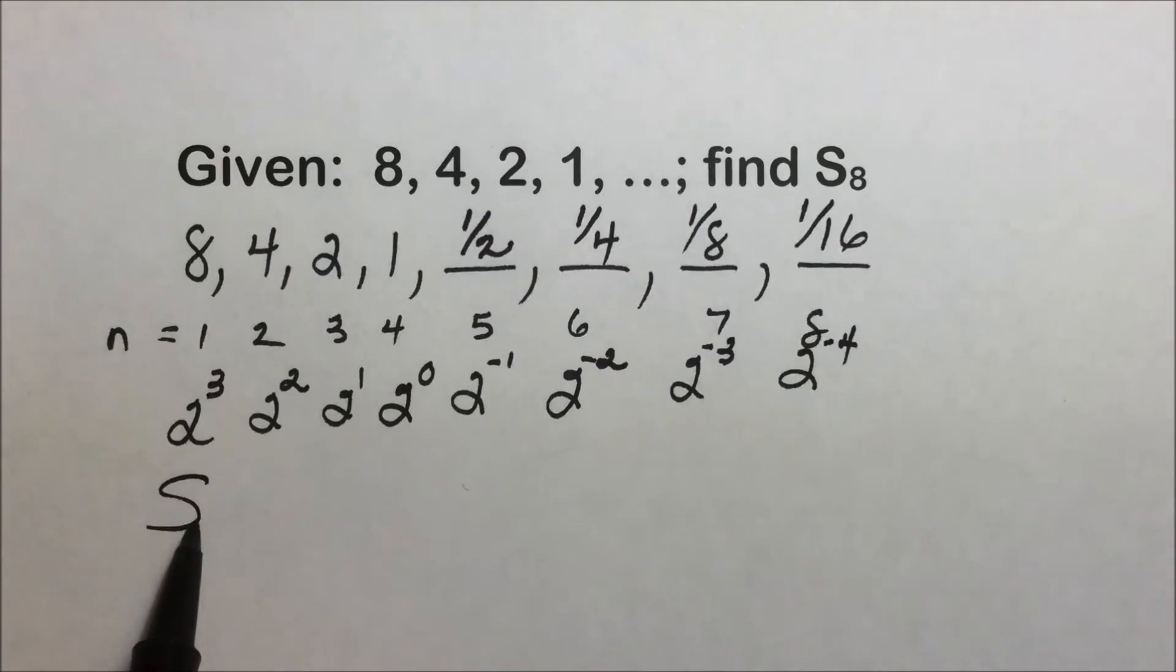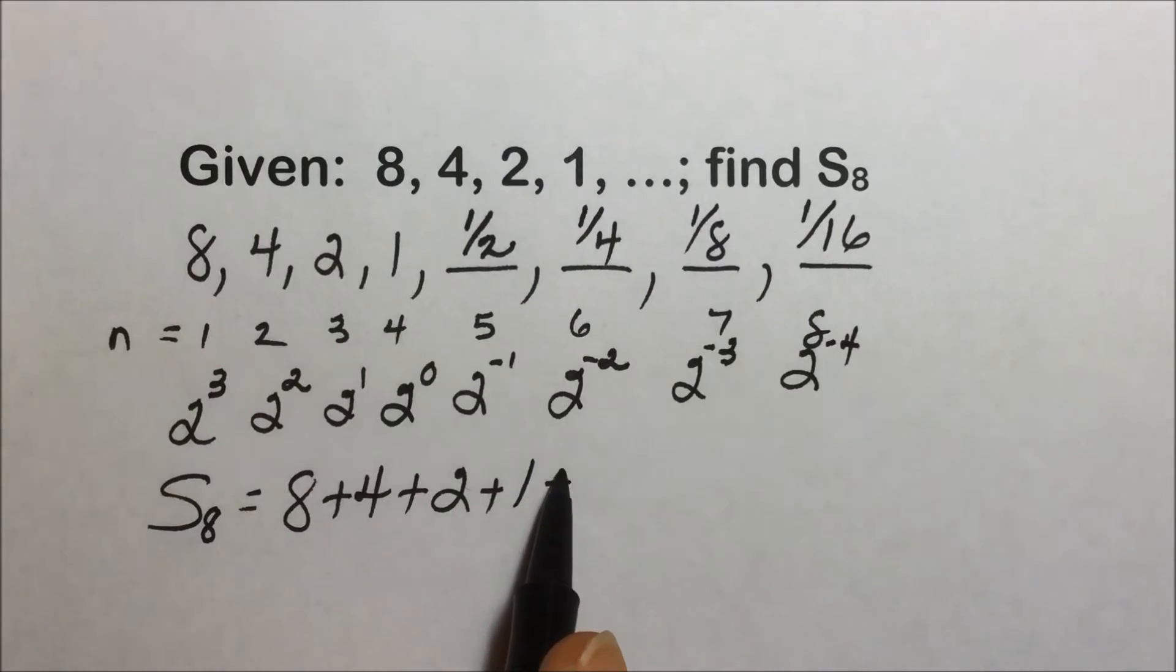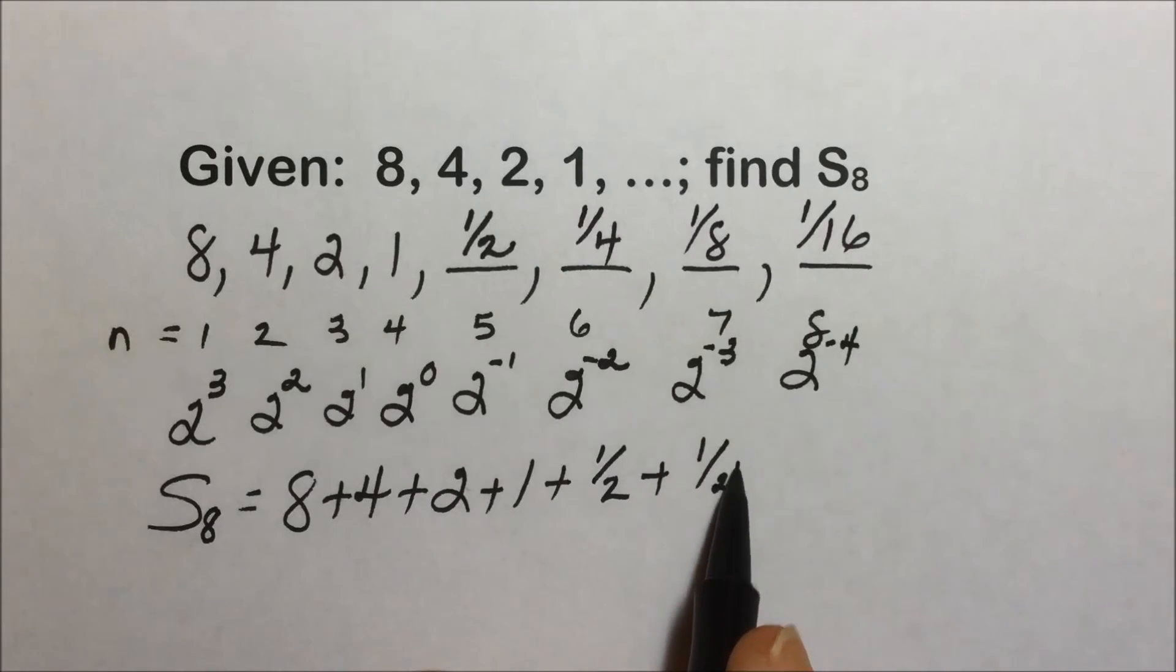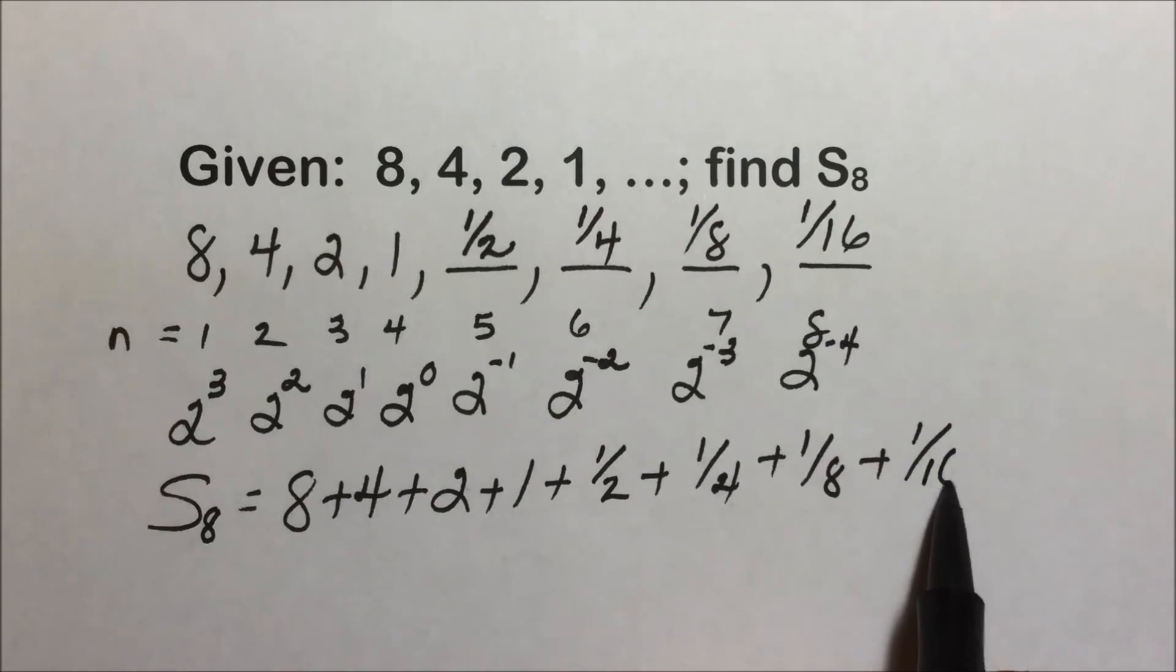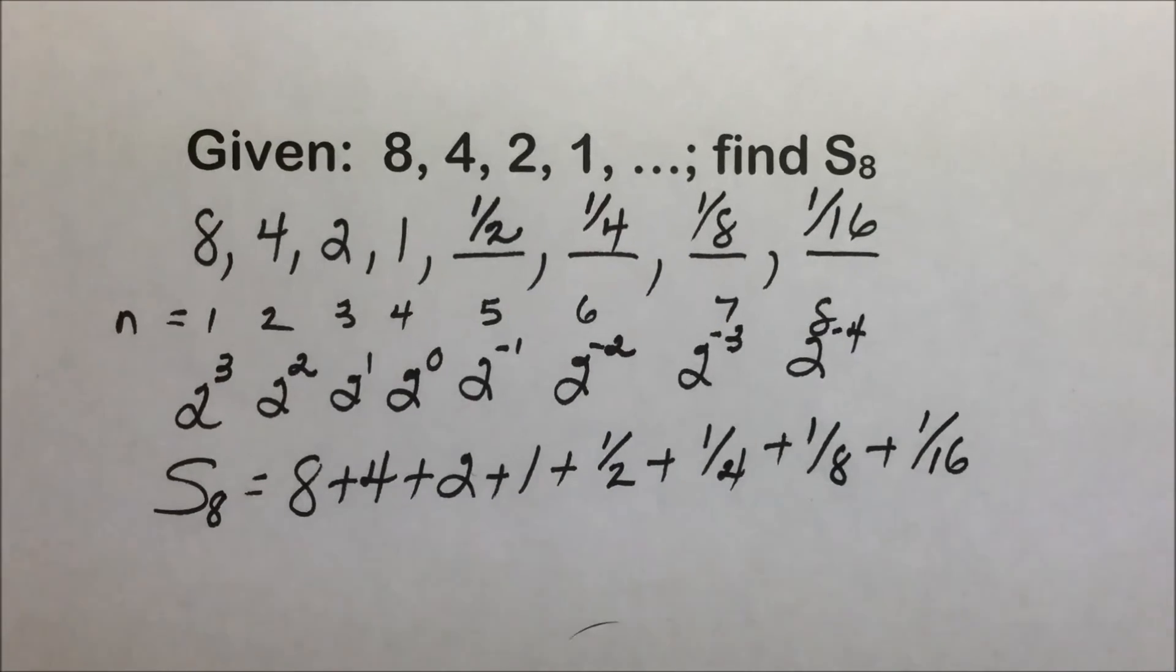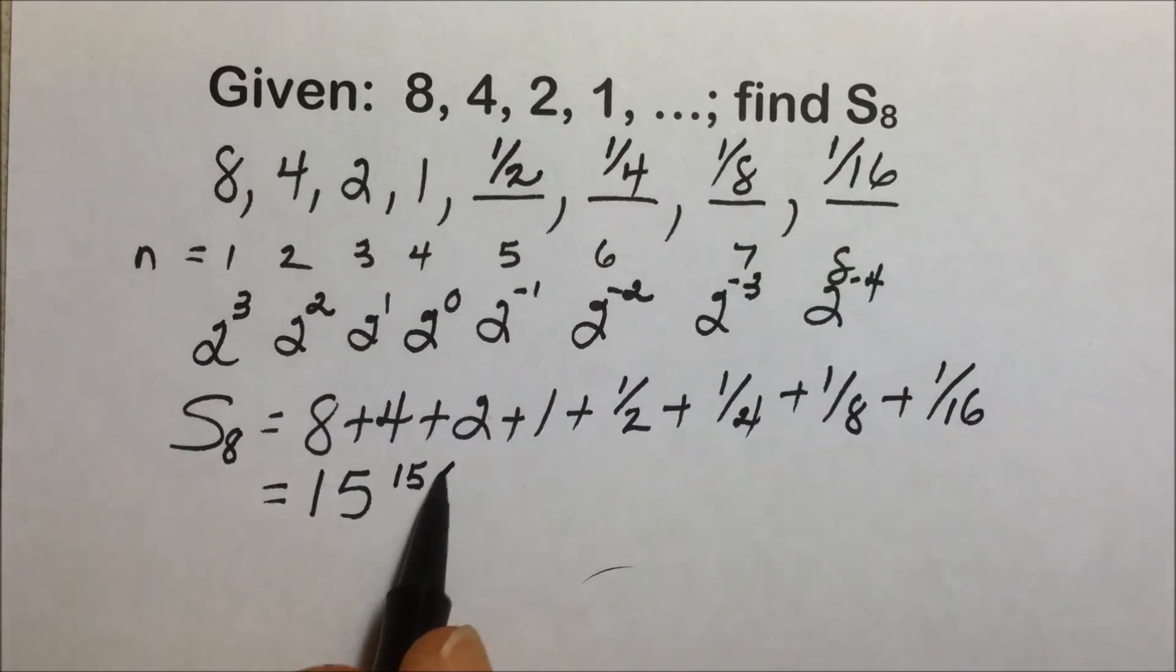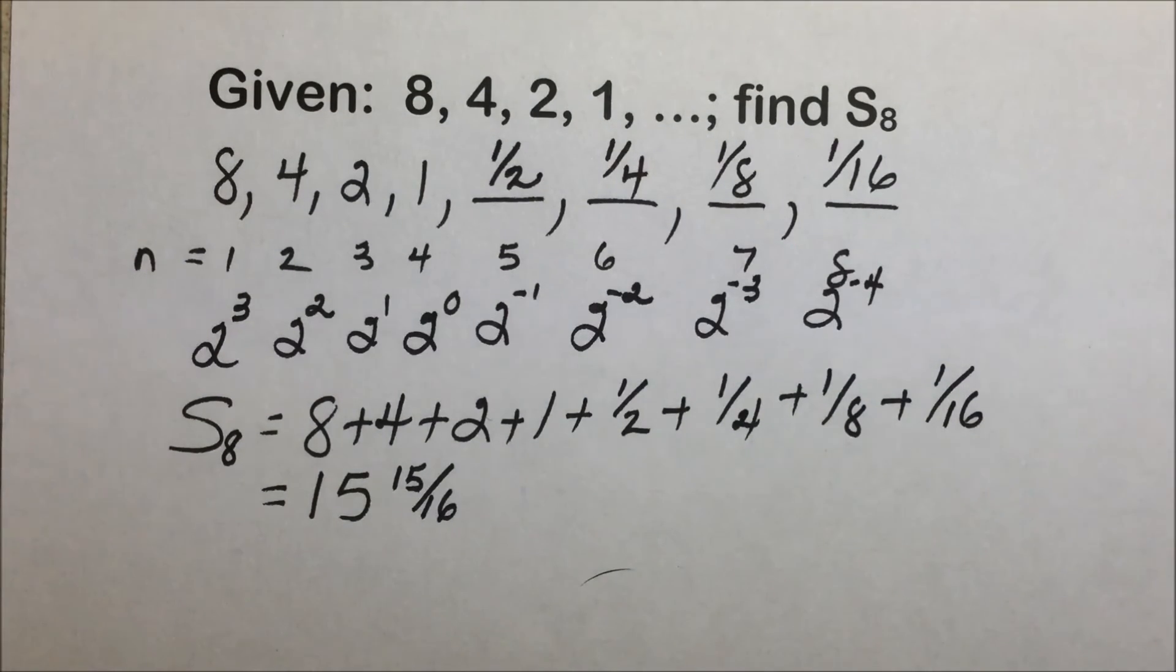The series then, S of 8, will be the sum of those first 8 terms. And whether you leave them as fractions or you convert them into decimal, now it's just a matter of adding them up, common denominator if you're going to do this without a calculator. Or as I said, perhaps either fraction key or decimal equivalency, it ends up as 15 and 15 16ths for an exact answer for the sum of the first 8 terms.